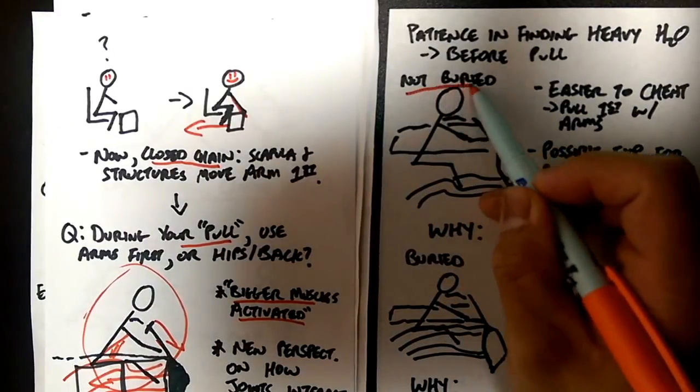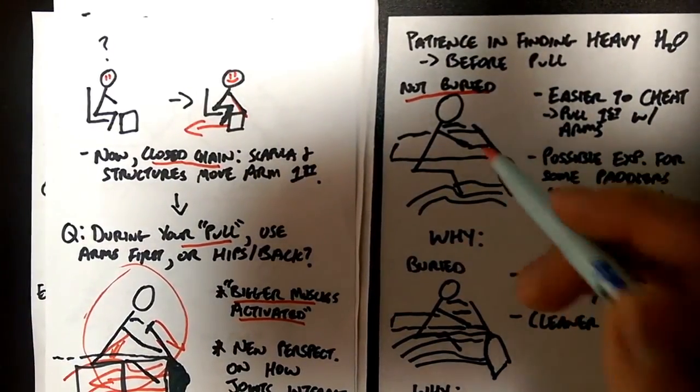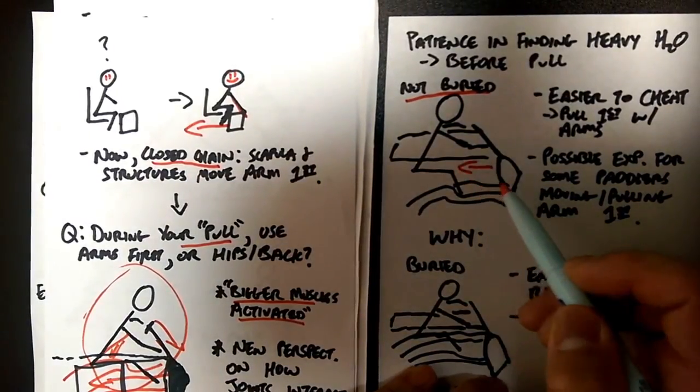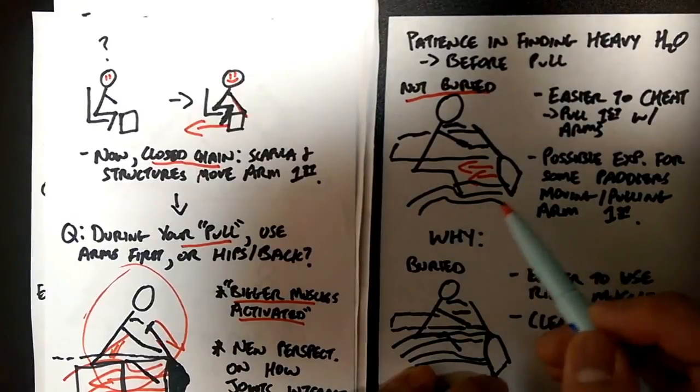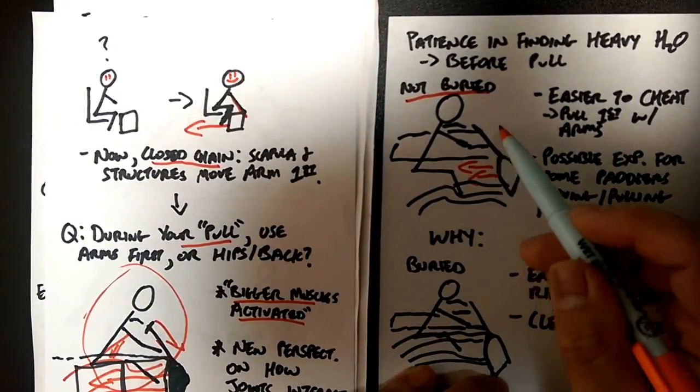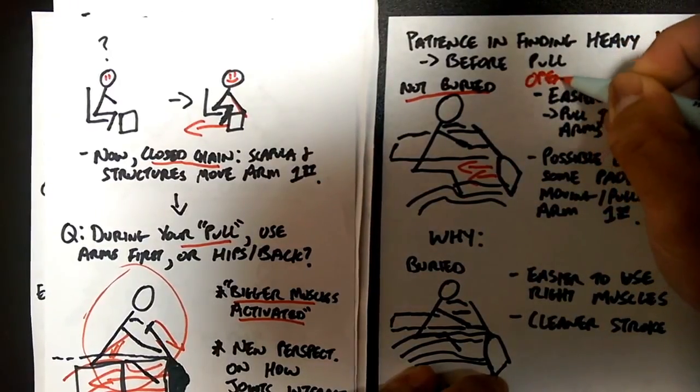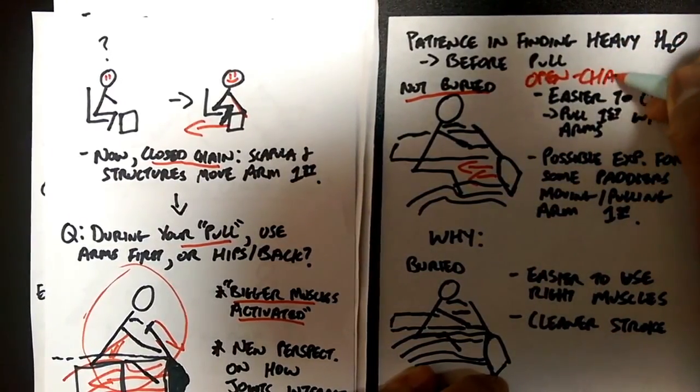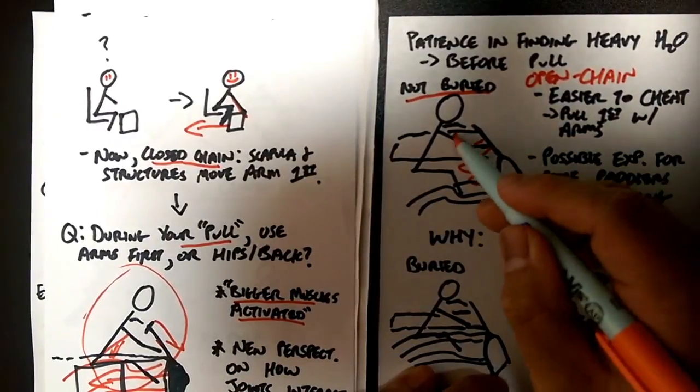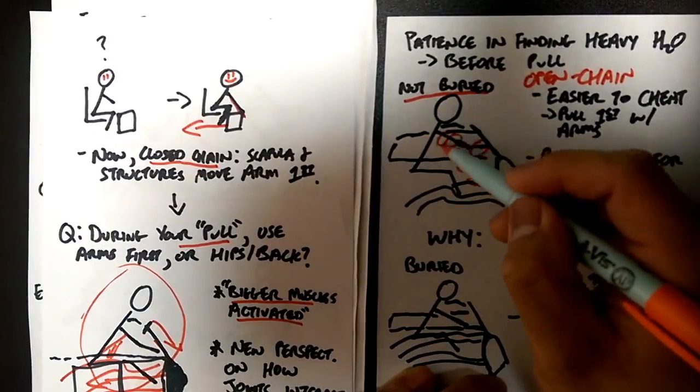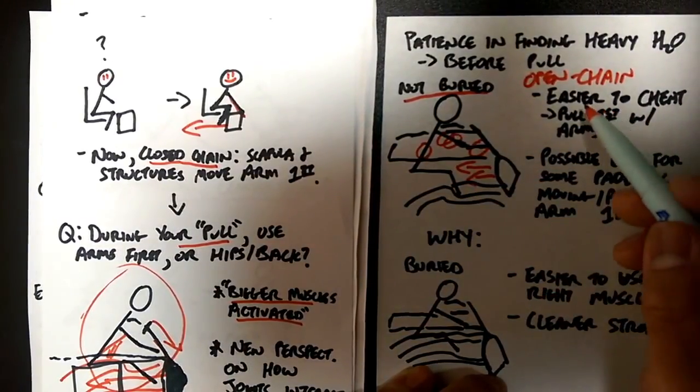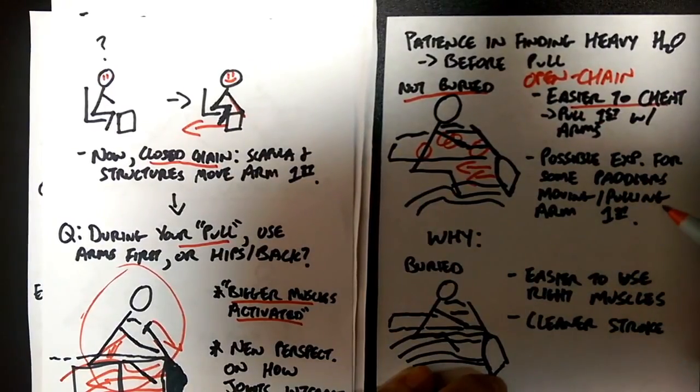And hopefully that gives you a little more insight as to why this is so important. Because if you're not patient and if you pull before you're fully buried, you're basically doing an open chain exercise, right? Kind of like what we were saying earlier, the water is below the blade essentially. And when that happens, when you're in this open chain scenario, the distal part is going to move before the proximal part.